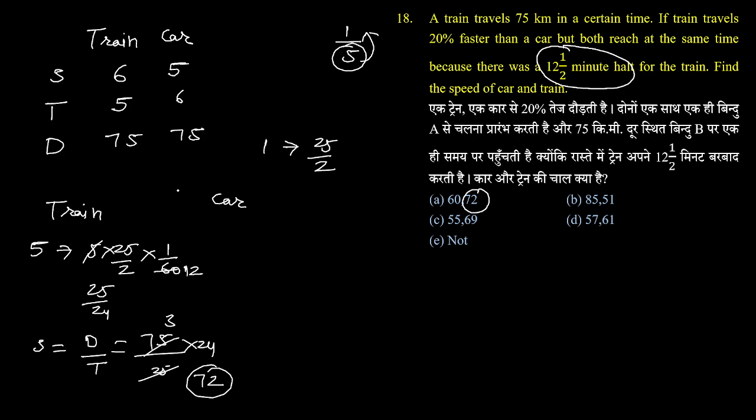कार की speed निकालने के लिए पूरी कहानी करने की जरूरत नहीं है क्योंकि 6 की value 72 है तो 1 की value बन जाएगी 12. Ratio 6 और 5 का था. अगर 1 की value 12 है तो 5 की value बन जाएगी 60. Car की speed 60 और train की speed 72 है और यही हमारे पास option number A में दिया है.